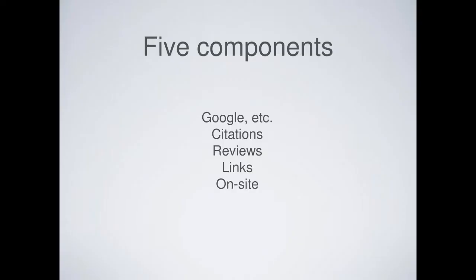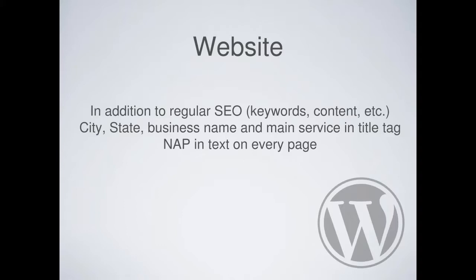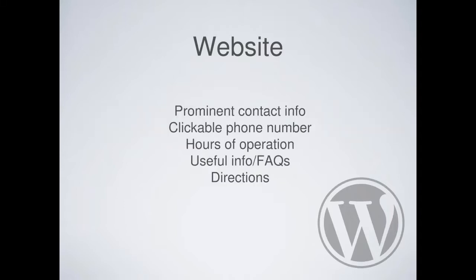In addition to all the regular SEO stuff, some key on-site reminders: city, state, business name, and main service in your title tag; NAP in text on every page. I also like prominent contact information — a phone number high on the page. A clickable phone number is critical for mobile. Hours of operation is one of the main things people visit local business websites for. Blog about your FAQs — if people are asking you those things in person, they're probably searching for them online too.